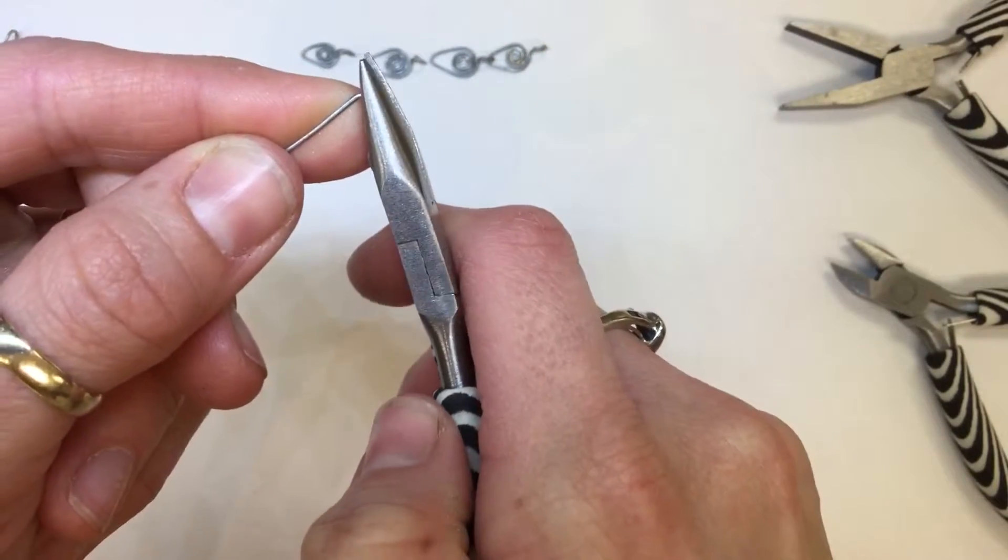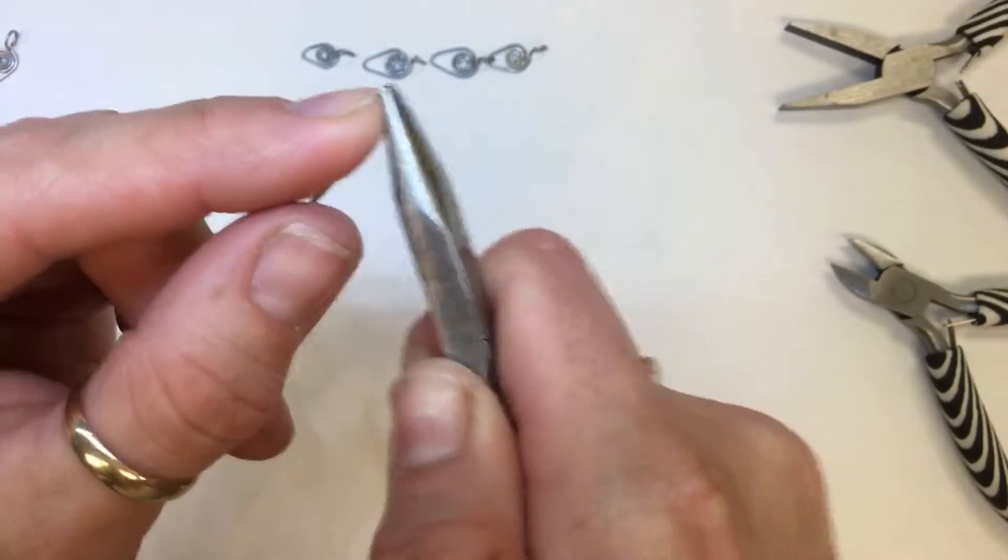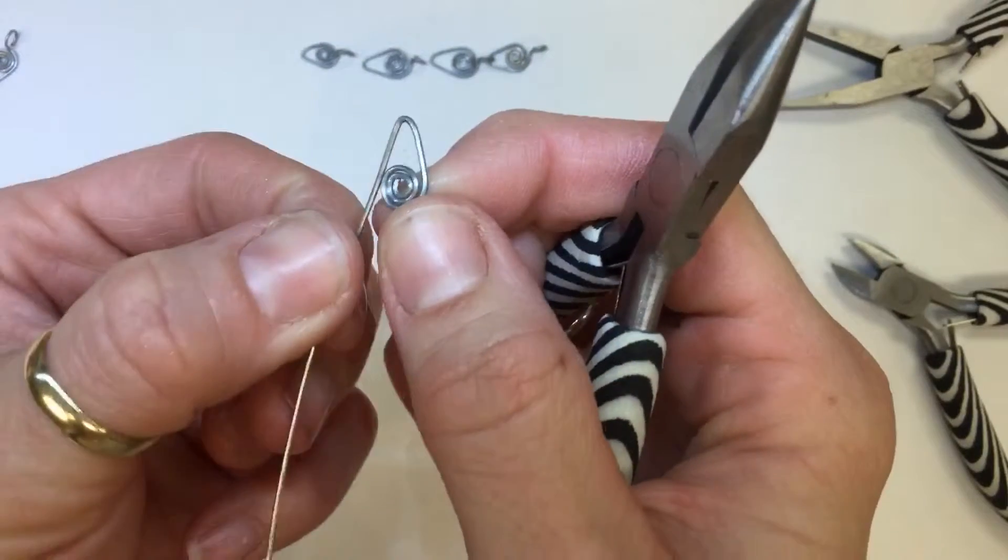Then I'll put the spiral into the pliers, having the point right here by the point of my pliers. I'm going to push on that to sharpen the angle so I have a nice triangle there.